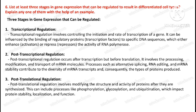Question number six: list at least three stages in gene expression that can be regulated to result in differentiated cell types, and explain any one of them with the help of an example.